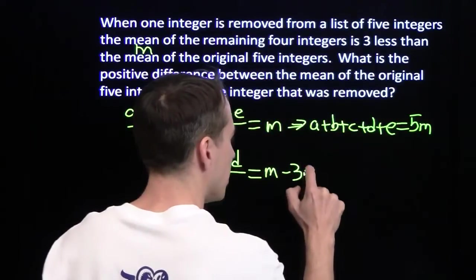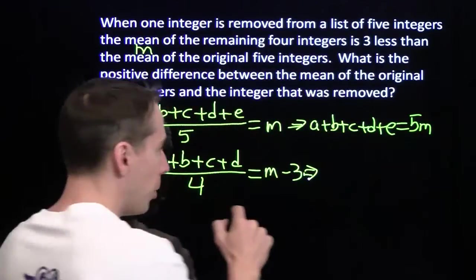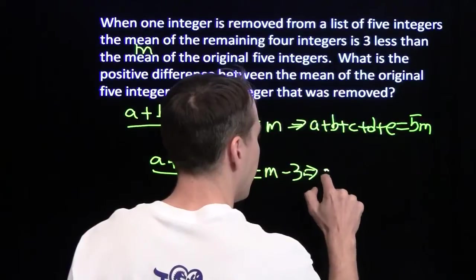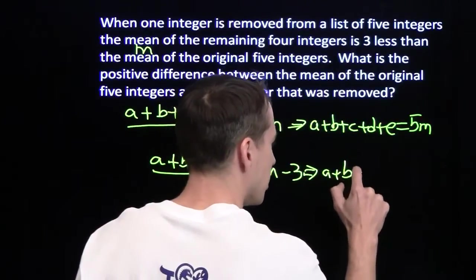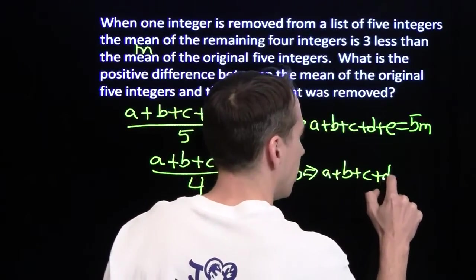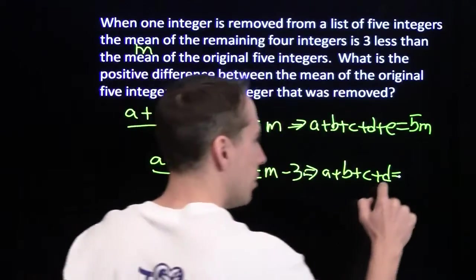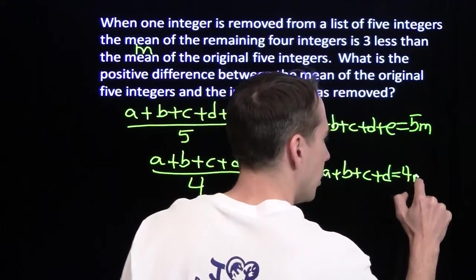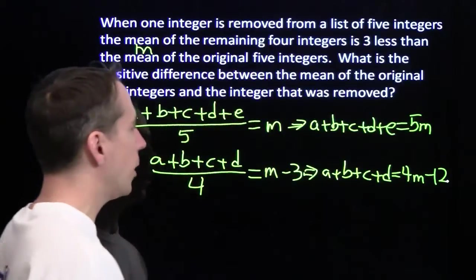Alright, that's all fine and good. I'm going to do the same kind of thing down here. I'm going to multiply both sides by four. And I'm going to have A plus B plus C plus D is four M minus twelve.